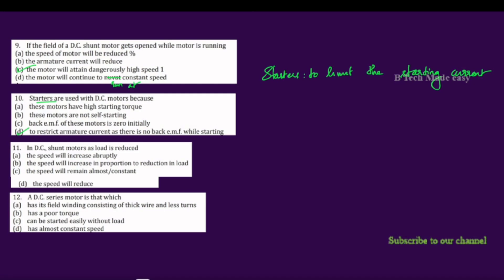Next question: In a DC shunt motor, as the load is reduced — what happens to the speed? The DC shunt motor is known as an almost constant speed motor. If the load is reduced, there is only a slight decrease in speed — it remains nearly constant.